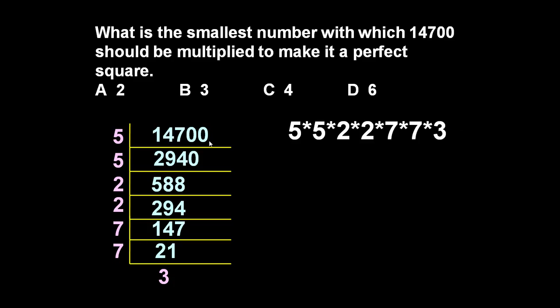Now if we critically analyze it, let us see: 5 times 5, it means it is 5 squared, into 2 into 2 means 2 squared, 7 into 7 means 7 squared, but 3 is a single number, so there is no 3 squared.